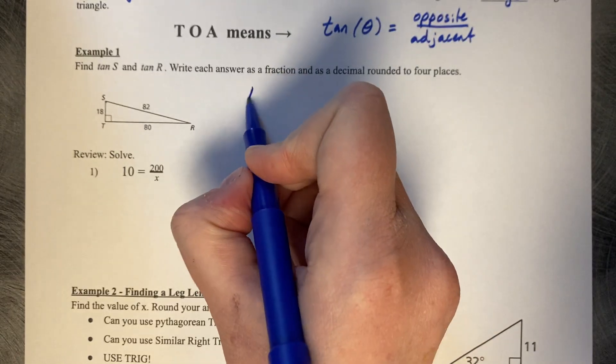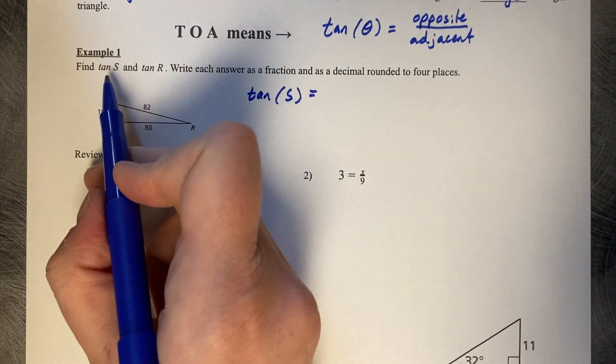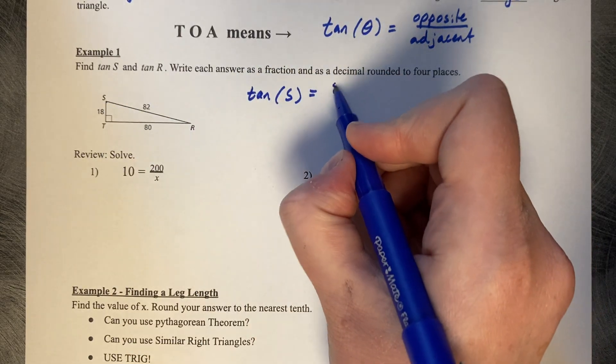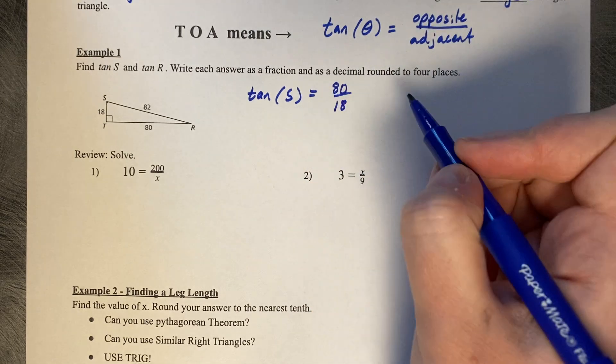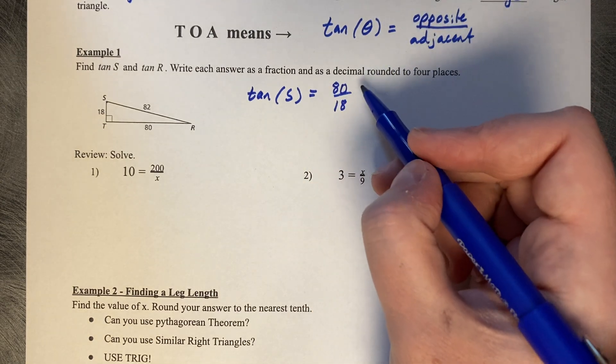The tangent of S is opposite over adjacent, 80 over 18. You can simplify this to 40 over 9.